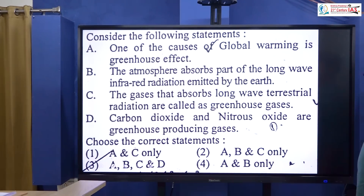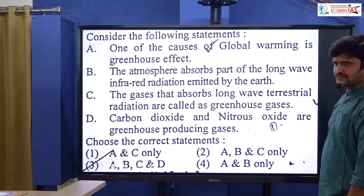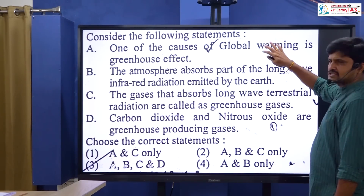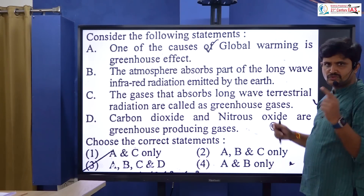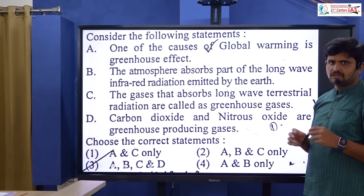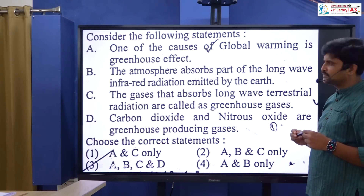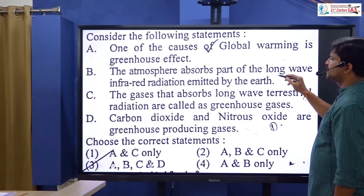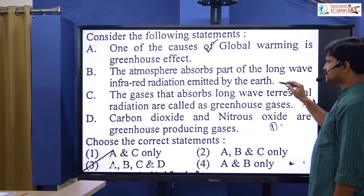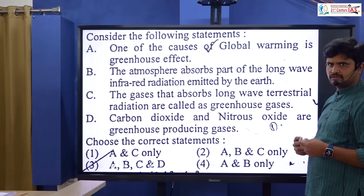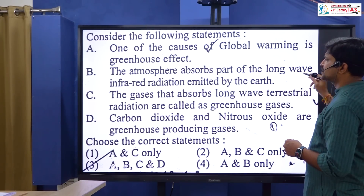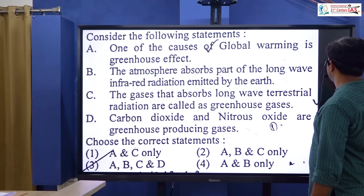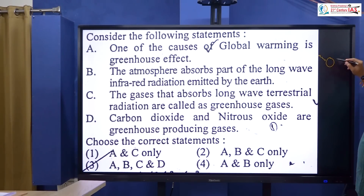Consider the following statements on global warming — this is one of the difficult questions. Statement 1: one of the causes of global warming is the greenhouse effect — this is correct. Statement 2: the atmosphere absorbs the long wave infrared radiation emitted by the earth. However, incoming solar radiation is actually long wave and outgoing radiation reflected from earth is short wave.